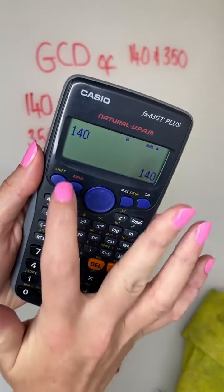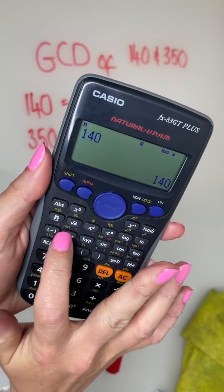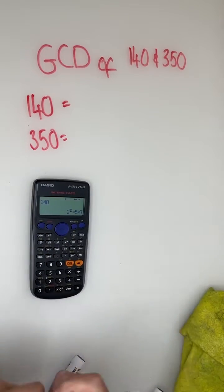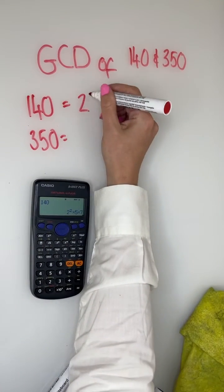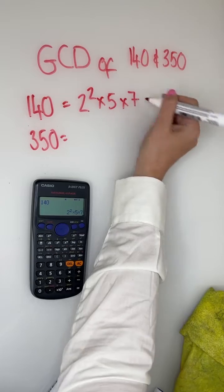140 equals shift, then you're going to use this fact button. There are your prime factors of 140. So it's 2 squared multiplied by 5 multiplied by 7.